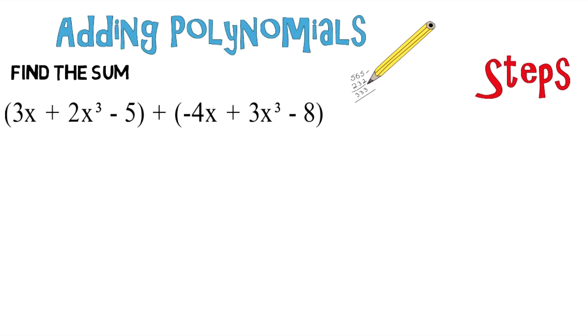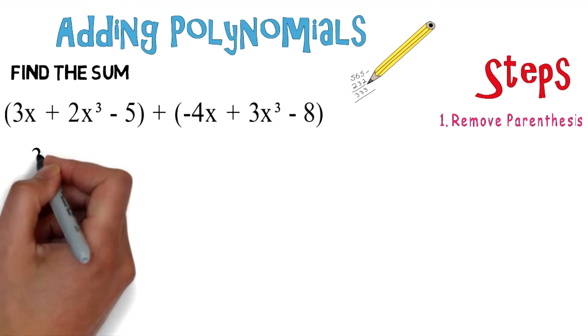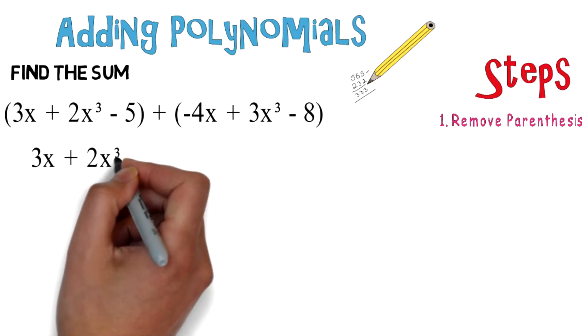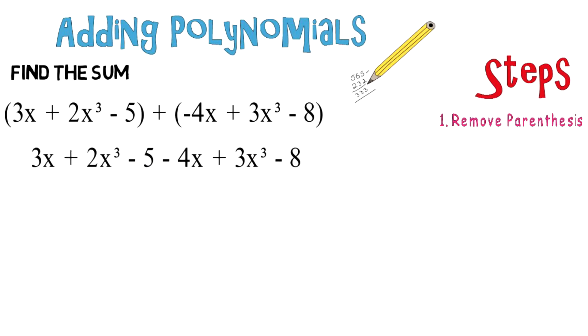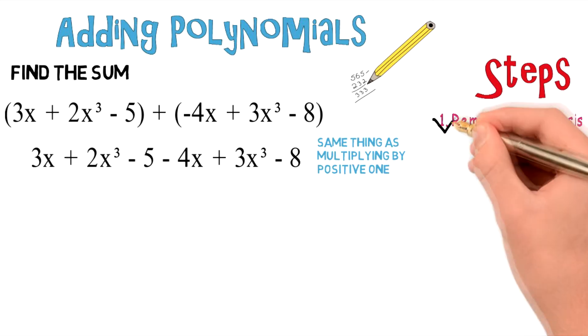Now first off, you want to remove the parentheses, so that's what I'll do. We'll rewrite this as 3x plus 2x to the third power minus 5 minus 4x plus 3x to the third minus 8. It's the same thing as multiplying by positive 1. Check off the first step.